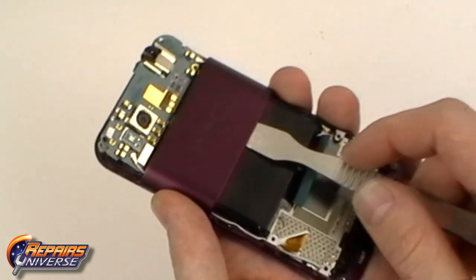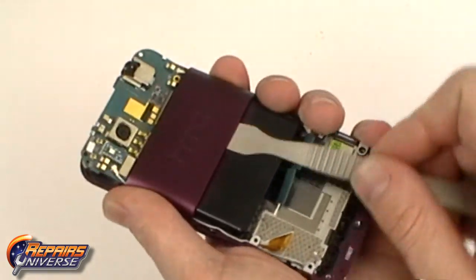We can now use the flat pry tool to begin releasing some of the adhesive holding the housing to the battery.